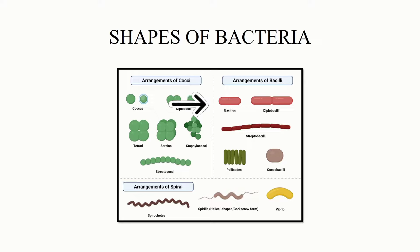If you look at the arrangement of the bacilli, single is called bacillus. If it occurs in pairs, it will be termed as diplobacilli. If it is in a chain, it will be termed as streptobacilli. And if it is just like that, it is palisades bacteria. And if the cocci and bacilli both shapes occur together, we will term it as coccobacilli.